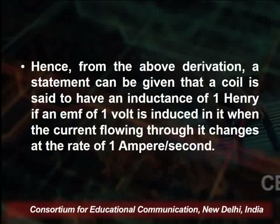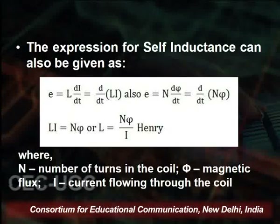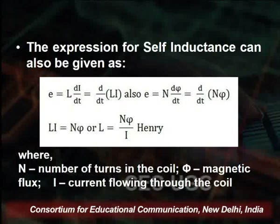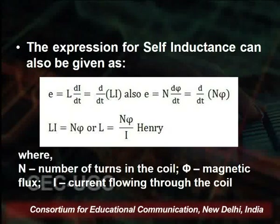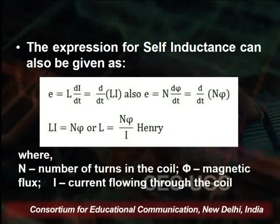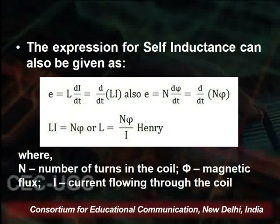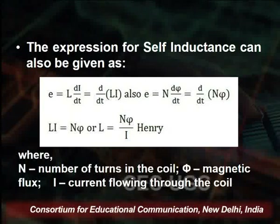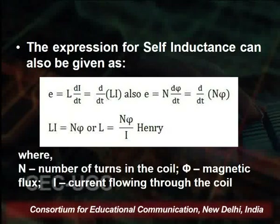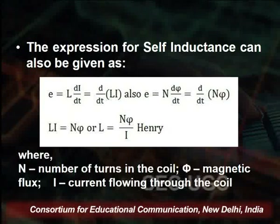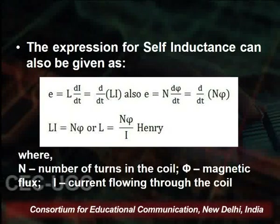The coil is said to have an inductance of 1 Henry if an EMF of 1 volt is induced in the circuit when the current flowing through it changes at a rate of 1 ampere per second. We can also write E equals N dφ/dt. From this, L equals N times phi divided by I, where N is the number of turns in the coil, phi is the magnetic flux generated, and I is the current flowing through the coil.